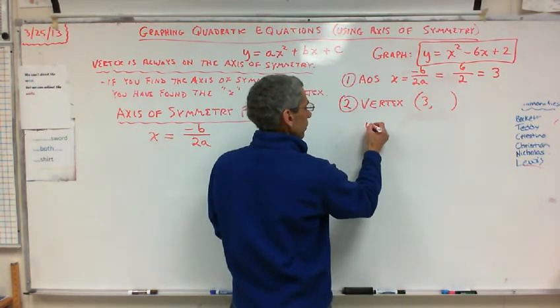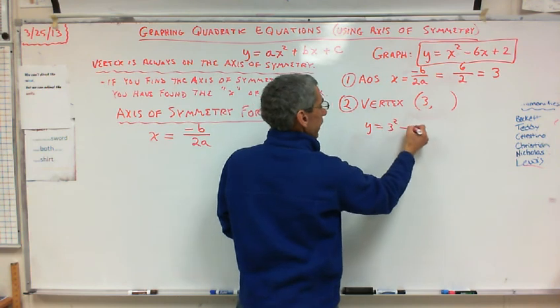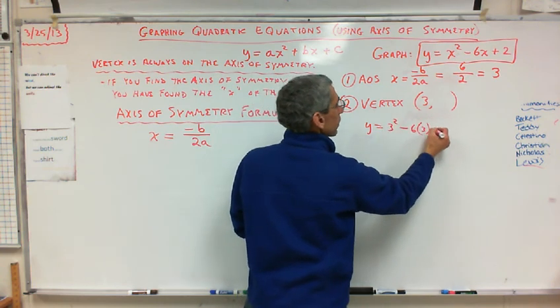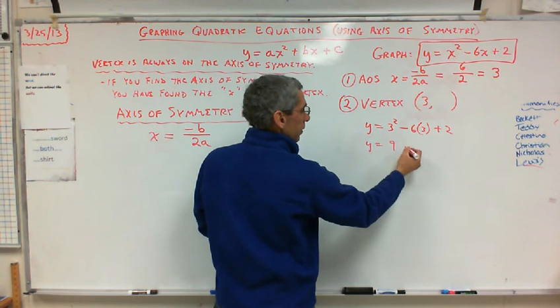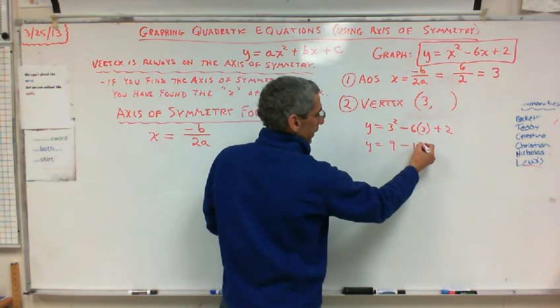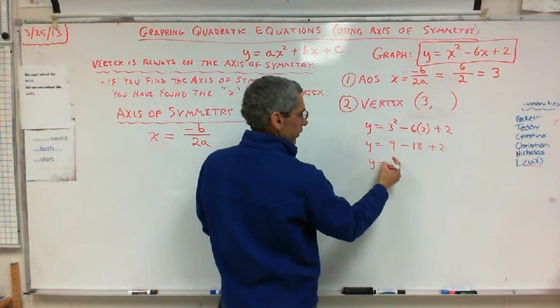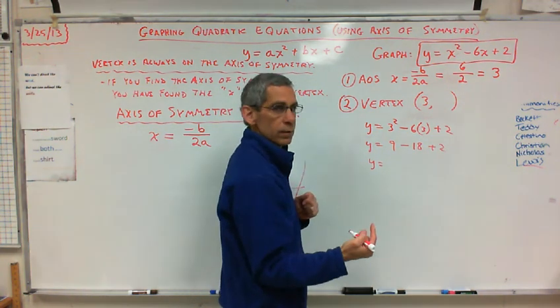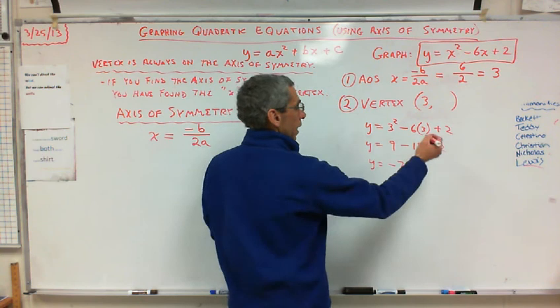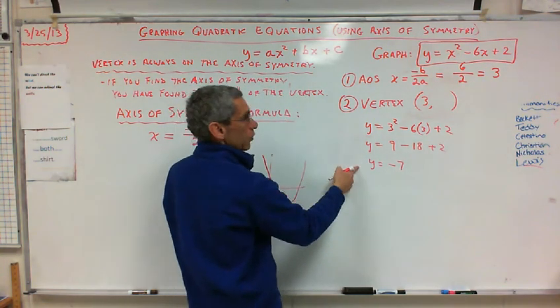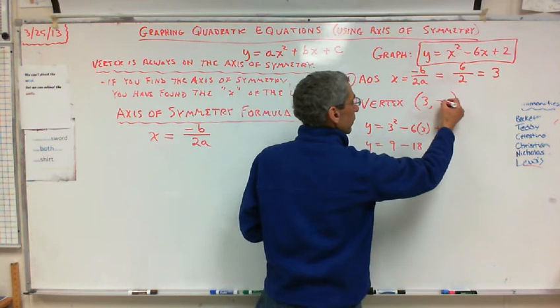We got y is equal to three squared minus six times three plus two. So y is equal to nine minus 18 plus two. So y is equal to, what's nine minus 18? Negative nine. Plus two. So negative seven. So that's my y of my vertex. Does that make sense to you guys? So I go over here and I say negative seven. That's my vertex.